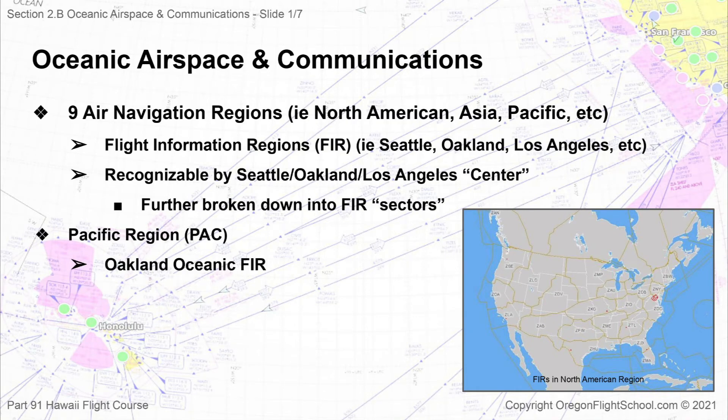At the top level of airspace organization, ICAO has divided the world into 19 air navigation regions including the North American region, European region, and Asia region, to name a few. These regions are then broken down into what are called Flight Information Regions, or FIRs. Within the North American region, for example, there are several FIRs such as the Seattle FIR, Oakland FIR, Los Angeles FIR, etc., and you know which region you are flying inside of when you talk to their corresponding center controller, such as Seattle Center or Oakland Center.